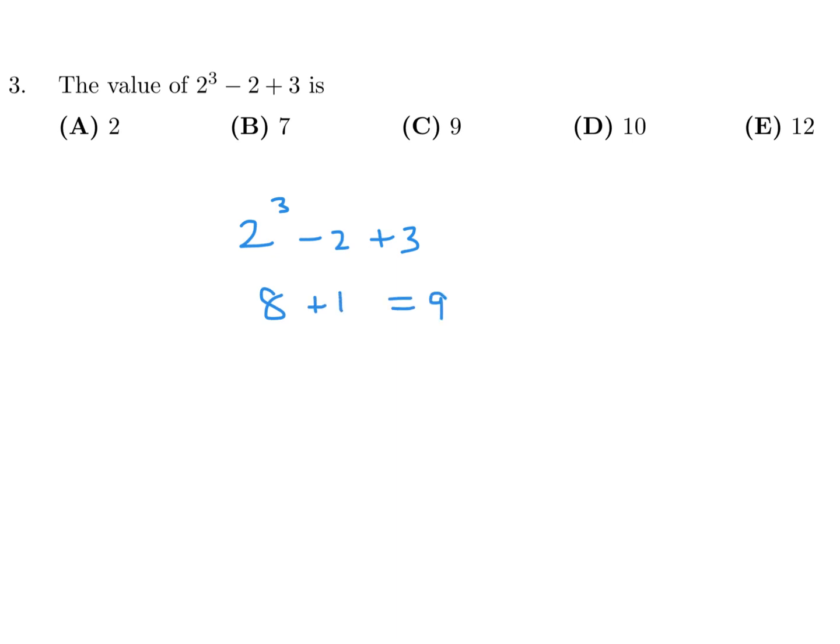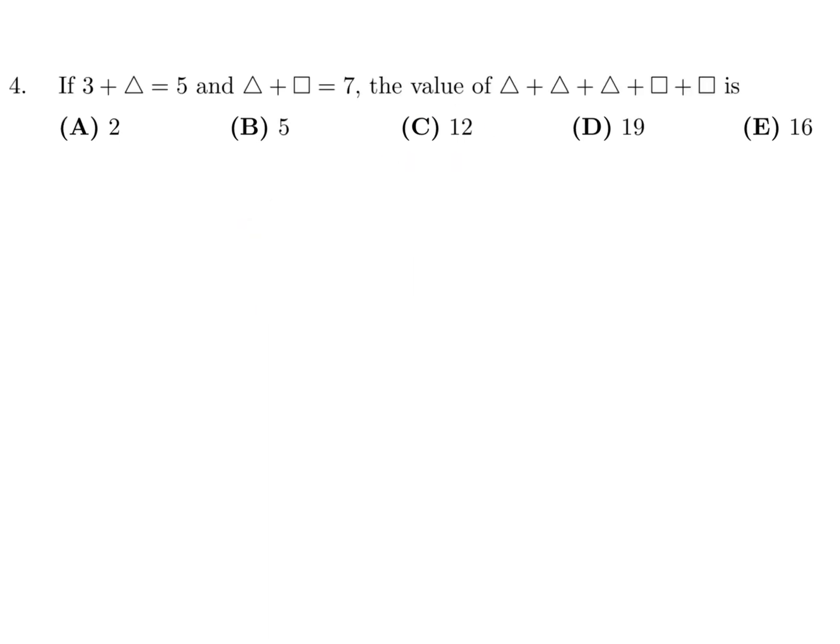If 3 plus triangle is 5 and triangle plus square is 7, the value of 3 triangles and 2 squares. So 3 plus triangle is 5, that means the triangle is 2. And then triangle plus square is 7, so 2 plus the square is 7, so the square is equal to 5.